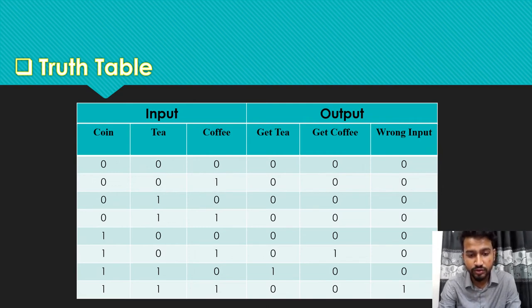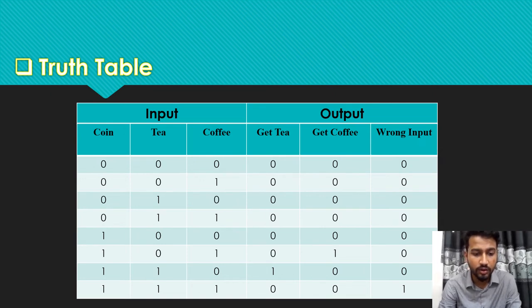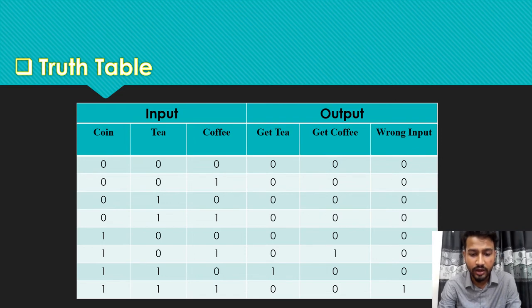In this truth table, the coin input is working as enable, because when all the coin input signal is zero, the output will always be zero and the machine will not work. For the working process of the machine, the coin signal must be enabled or one. Thank you so much, sir.